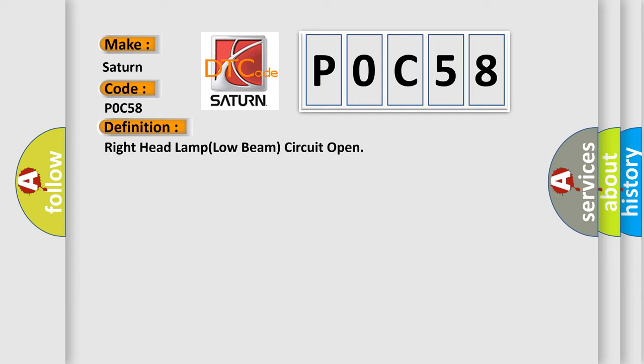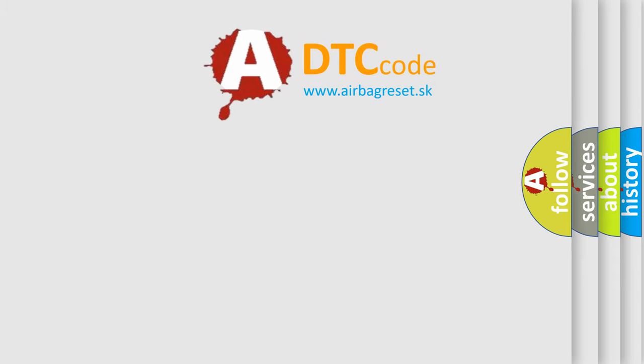And now this is a short description of this DTC code: Open in power circuit, light bulb failure. The airbag reset website aims to provide information in 52 languages.